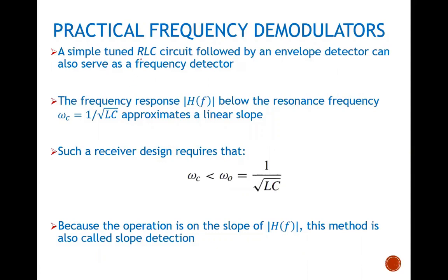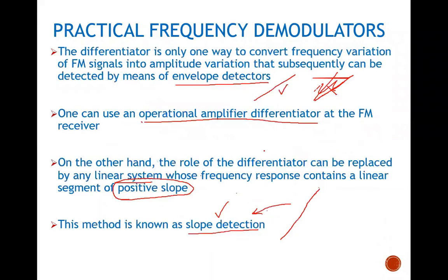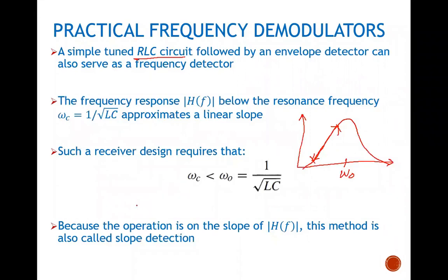Another circuit option is a tuned RLC circuit for bandpass filtering. If the RLC circuit has a resonance frequency omega_0, the region around its slope is fairly linear and can be used to apply the slope detection technique to get the desired output. The condition that must be satisfied is that omega_c — the center frequency of the FM signal — must be less than omega_0, so that the deviations from the center frequency fall within the linear region. Omega_0 is the resonance frequency of the circuit, given by 1 over the square root of LC.